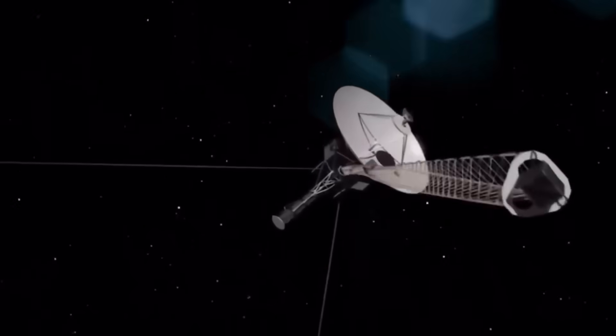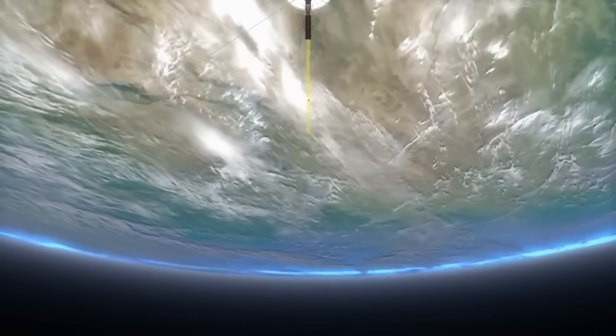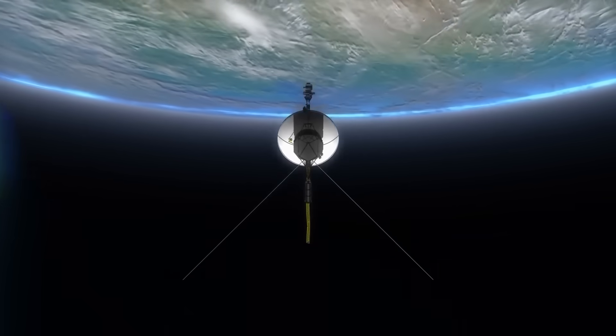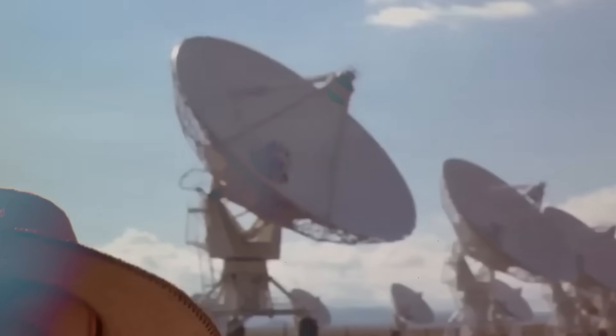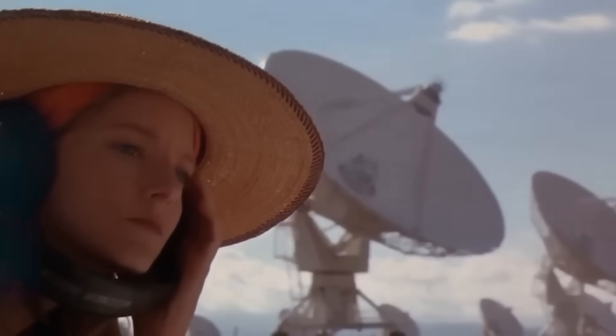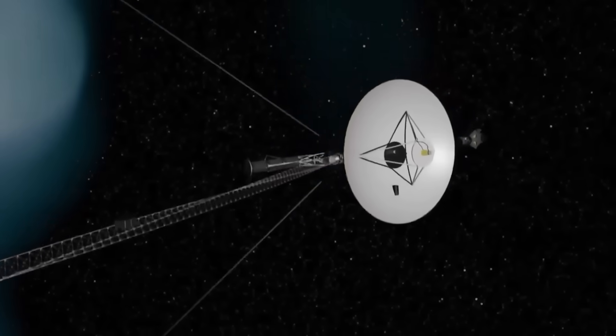We aimed it outward, hoping for echoes. Instead, we may have summoned a mirror. So what happens next? Where does Voyager go? What waits at those impossible coordinates? And more importantly, what awaits us when it arrives? If this story sent a chill down your spine, if something about Voyager's turn felt too precise, too timed, too human, then you need to stay with us. Because this isn't the end of the transmission. This is the first reply.